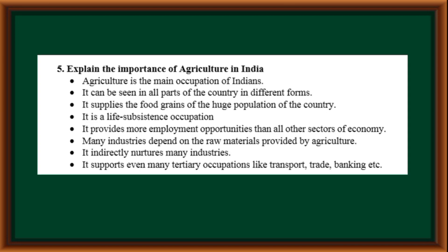Explain the importance of agriculture in India. Agriculture is the main occupation of India. It can be seen in all parts of the country in different forms. It supplies food grains to the huge population of the country. It is a life subsistence occupation, provides more employment opportunities than all other sectors of the economy, and many industries depend on raw materials provided by agriculture. It also supports many tertiary occupations like transport, trade, banking, etc.